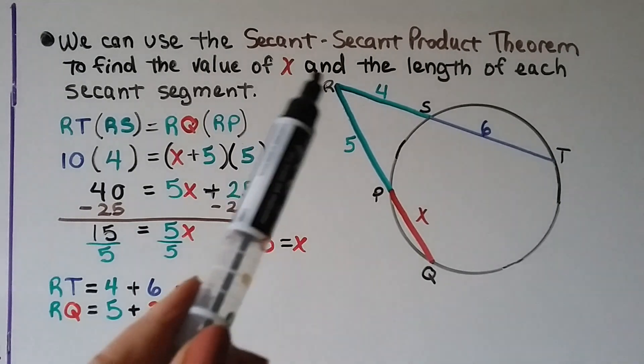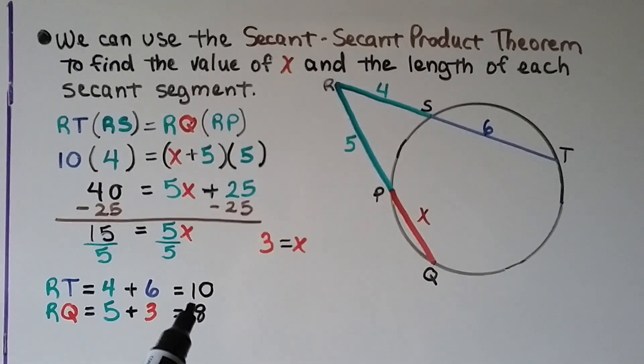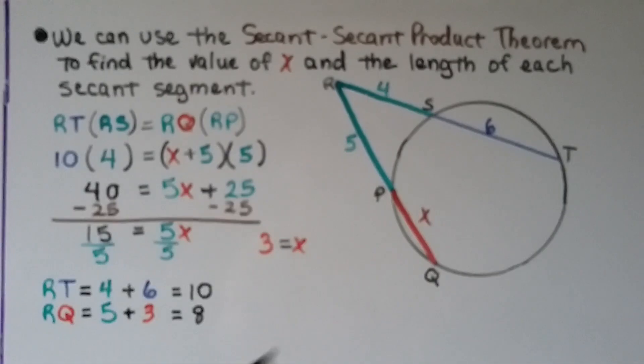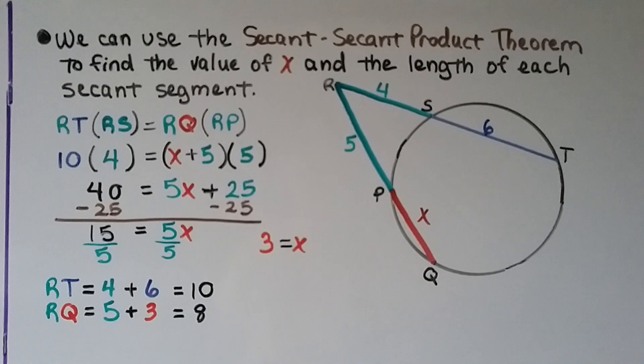Now we know RT is a 4 plus 6, that length is a 10, and RQ is a 5 plus a 3, so its length is an 8. That wasn't too bad, was it?